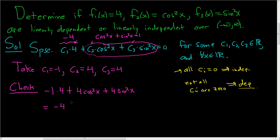So this is negative 4 plus, here we can factor out a 4. So we get 4 times cosine squared x plus sine squared x. And this is equal to negative 4 plus 4. Cosine squared plus sine squared is 1. So we end up with negative 4 plus 4, which is equal to 0. So the answer is dependent.